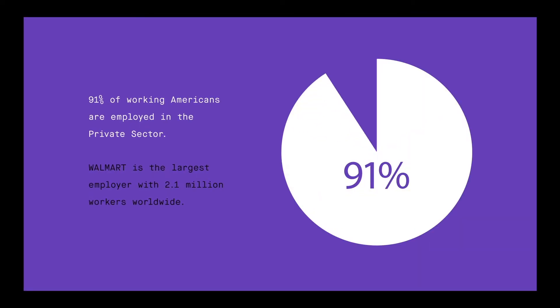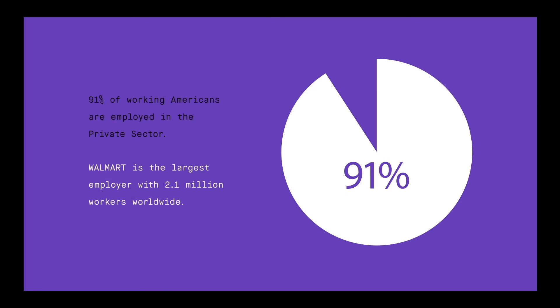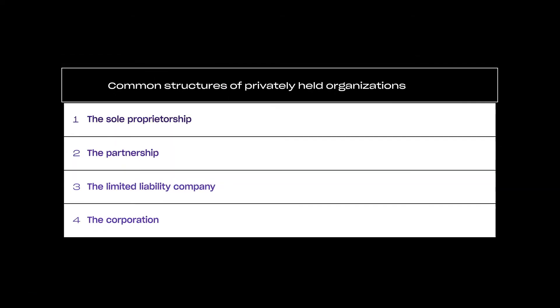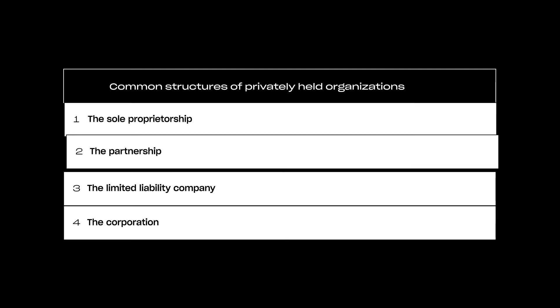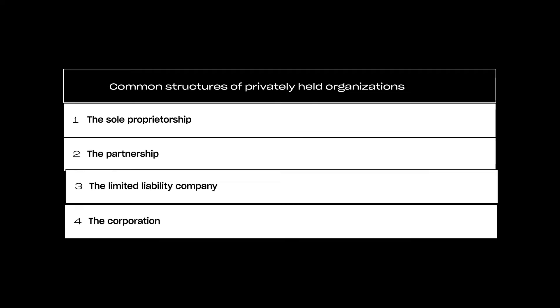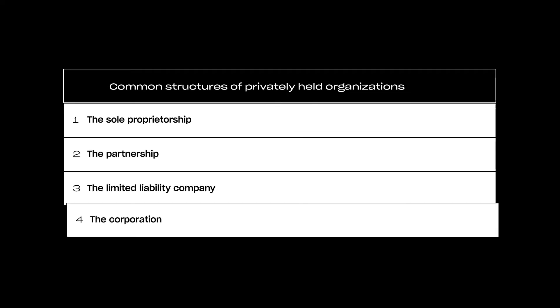Ninety-one percent of working Americans are currently employed in this sector. The largest private sector employer in the world is Walmart, with 2.1 million workers worldwide. There are four common structures of privately held organizations: the sole proprietorship, the partnership, the limited liability company, and the corporation.